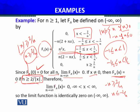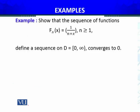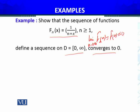Therefore, limit as n → ∞ of fn(x) = 0 for all x. This sequence of functions is pointwise convergent to the zero function — the null function — on (−∞, ∞). We will revisit this example repeatedly. Now let's formally prove convergence to 0 using epsilon and N.